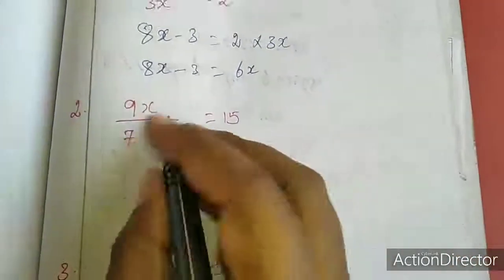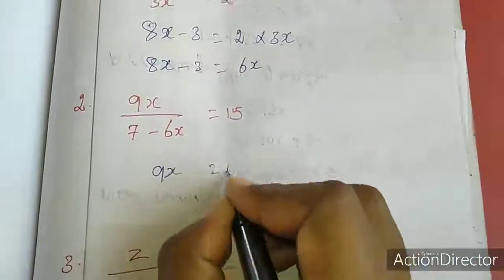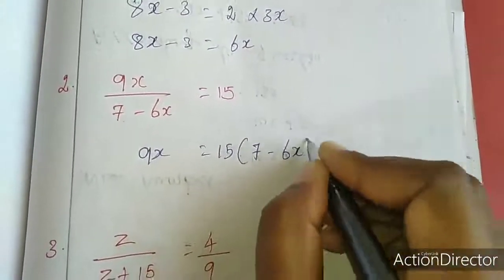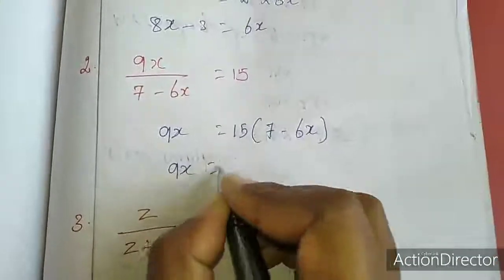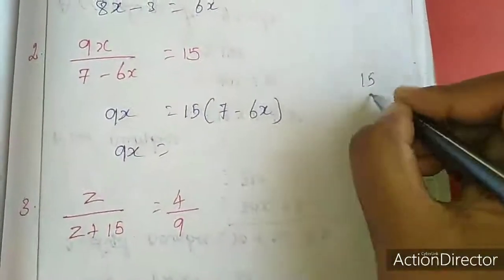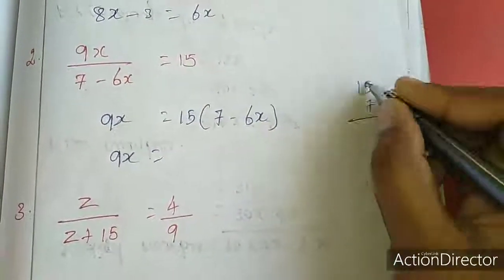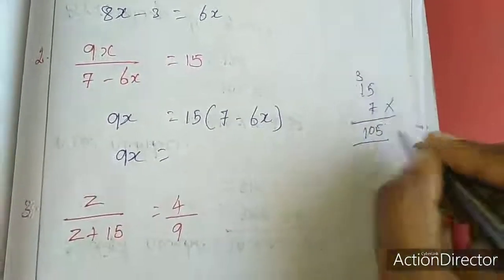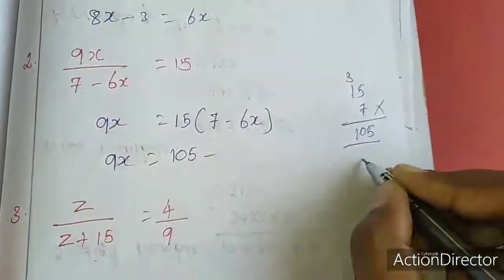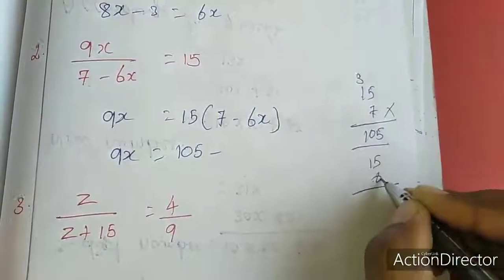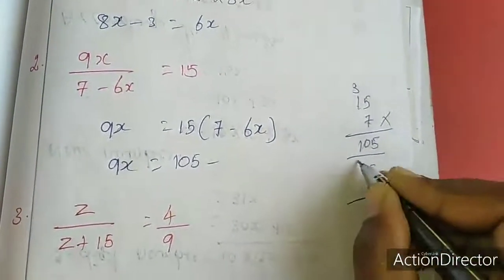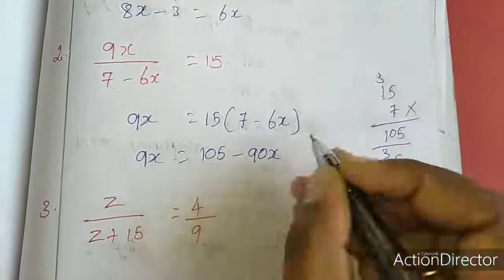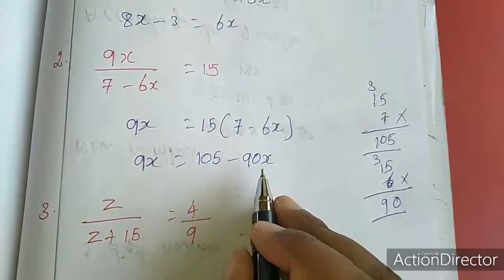Now the second sum. I will minimize — 9x equal to 15 into, this one comes this side in multiplication, 7 minus 6x. So 9x equal to 15 into 7, that means 105 minus 15 into 6, which is 90x. Now you have to solve and find out the value of x.